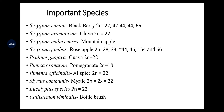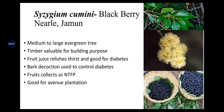Important species: Syzygium cumini is blackberry (jamun), with chromosome number ranging from 2n = 22 to 66. Syzygium aromaticum is clove, 2n = 22. Syzygium malaccense is mountain apple. Syzygium jambos is rose apple, 2n = 28 to 66. Syzygium guajava is guava, 2n = 22. Punica granatum is pomegranate, 2n = 18. Pimenta officinalis is allspice, 2n = 22. Myrtus communis is myrtle, 2n = 22. Eucalyptus species, 2n = 22. Callistemon viminalis is bottle brush. Syzygium cumini is a medium to large evergreen tree; its timber is valuable for building purposes, fruit juice relieves thirst and is good for diabetes, and bark decoction is used to control diabetes. Fruits are collected as non-timber food products and it is good for avenue planting.